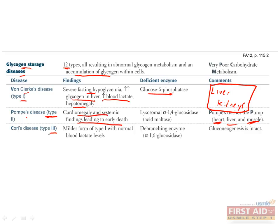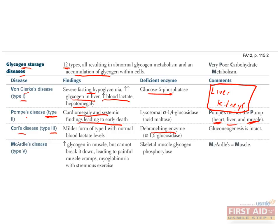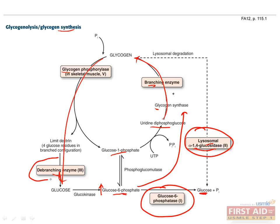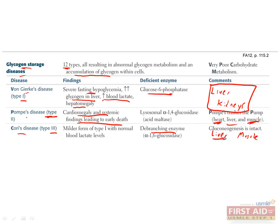The third type of glycogen storage disease, known as Cori's disease, is caused by deficiency of de-branching enzyme, which is required to break down glycogen into glucose. This primarily affects liver and muscle and has findings similar to type 1, but without the lactic acidosis. Symptoms include hepatomegaly, hypoglycemia, and delayed growth. The hypoglycemia is more mild in Cori's disease than in von Gierke's disease, and symptoms in general are more benign, because Cori's disease does not affect gluconeogenesis, which is impaired in von Gierke's disease since glucose is trapped in the liver as glucose-6-phosphate.